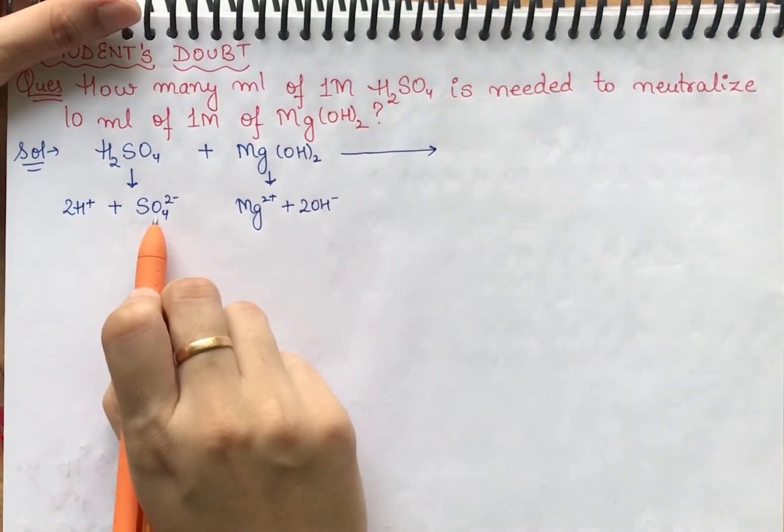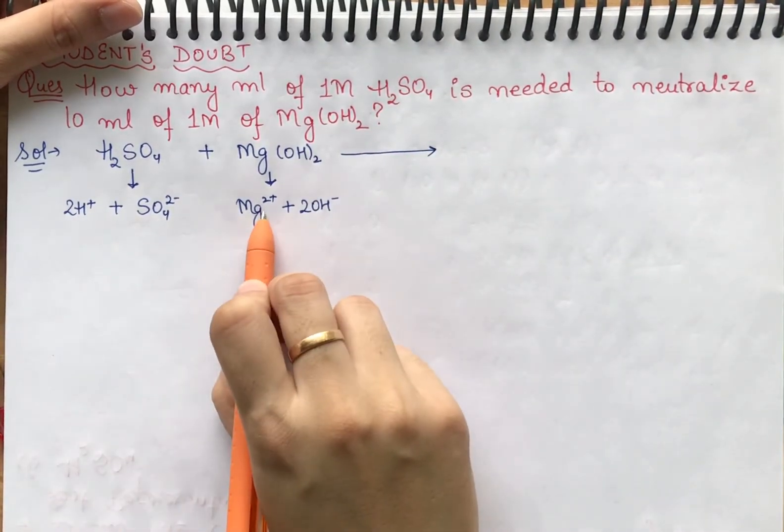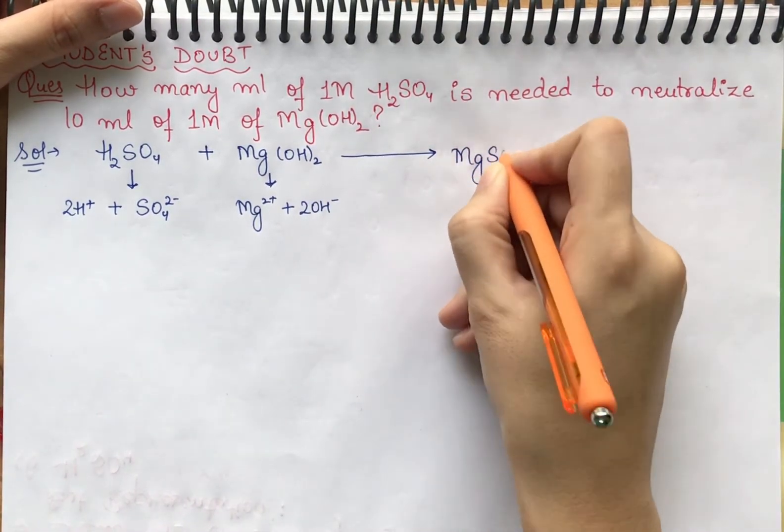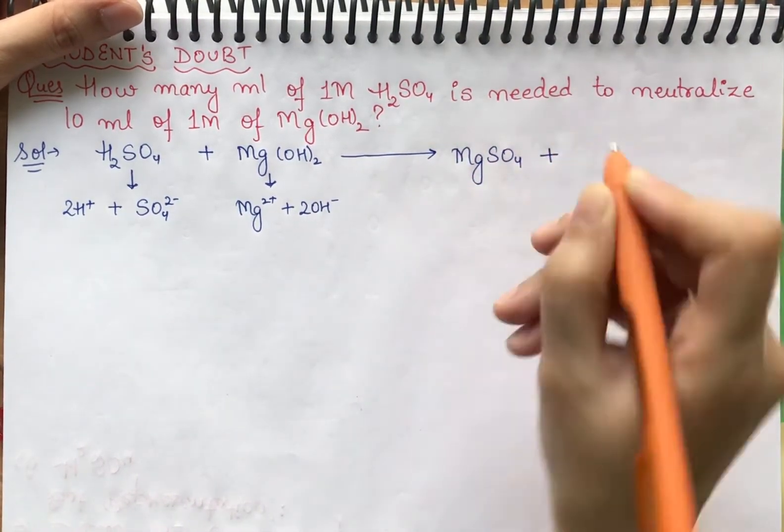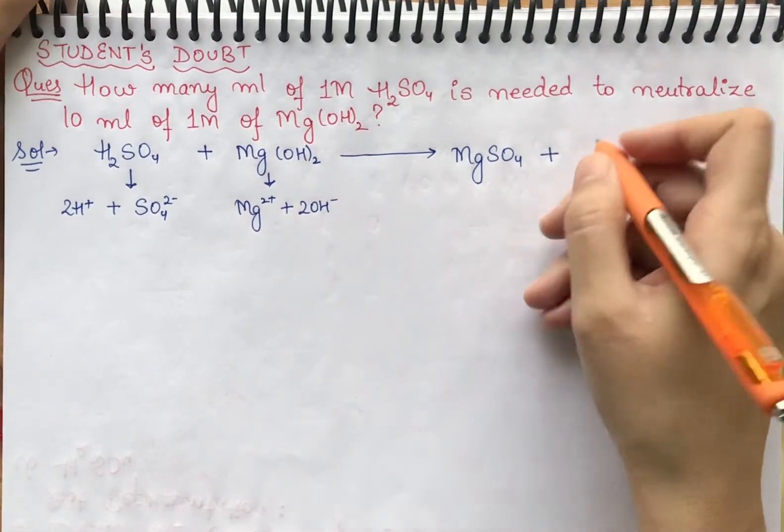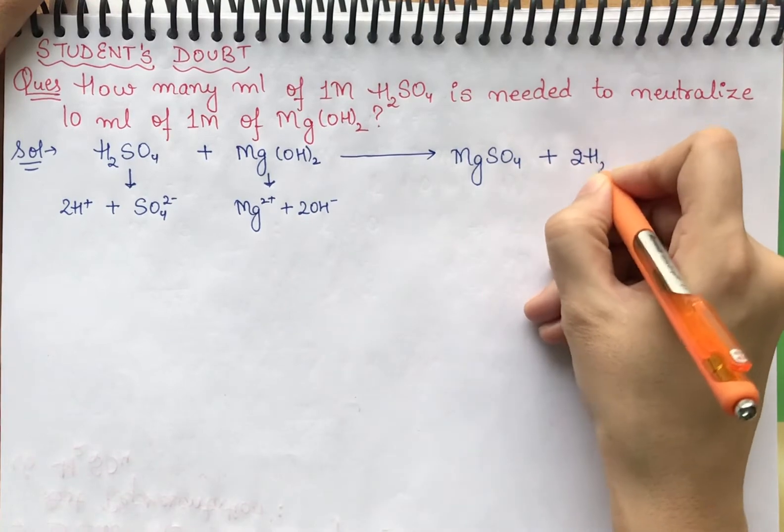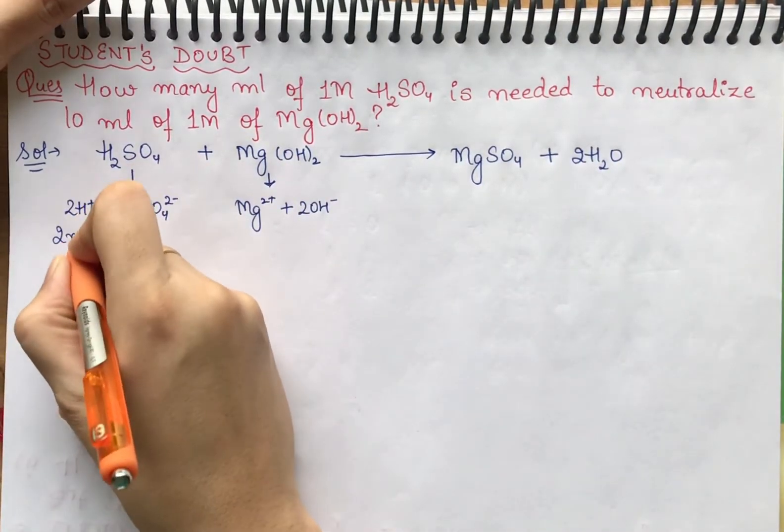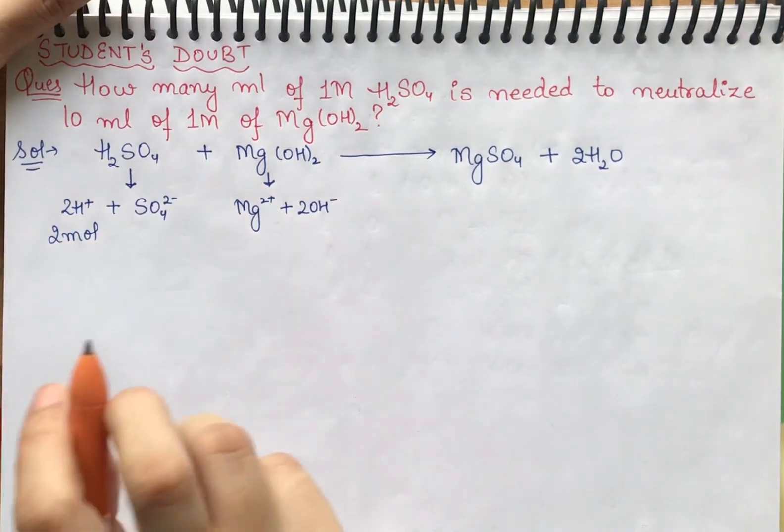So what will happen is that SO4 2- will react with Mg2+ to form MgSO4. For neutralization, H+ ions will react with OH- ions. We know that 2 moles of H+ ions react